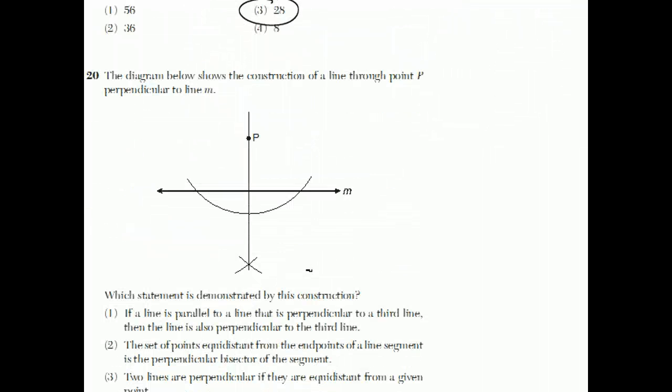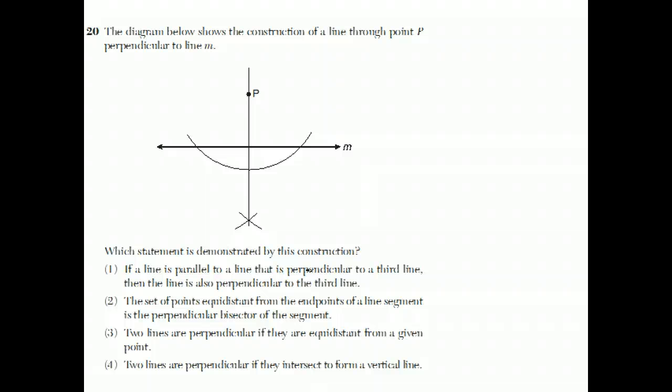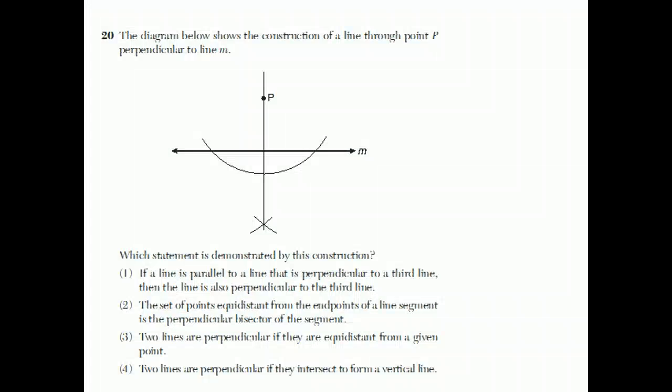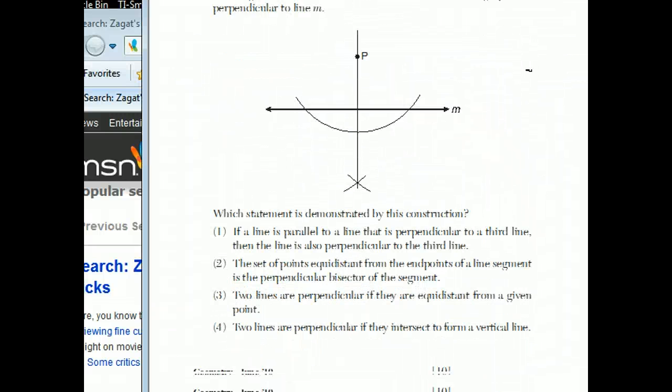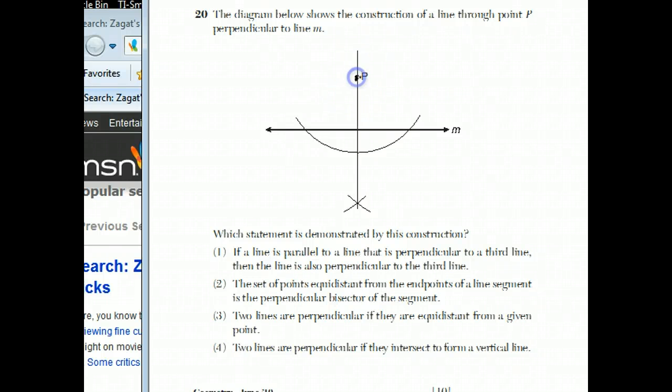Question 20. And finally, another construction question turned into a multiple choice question. The diagram below shows the construction of the line through point P perpendicular to line M. Which statement is demonstrated by this construction? Actually, it's a pretty confusing question. Let's take a look here. The basic idea is that a circle was drawn with P as the center. So these two points are equidistant from P. And then from this point, an arc is drawn. And with that same radius, this arc is drawn from this point. So these two lines would be congruent also. So these two points are both equidistant from these two points.